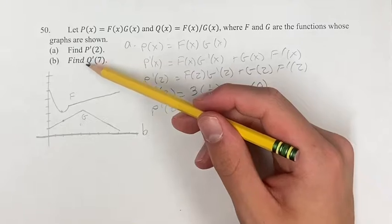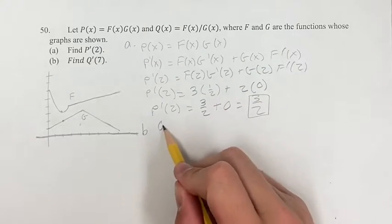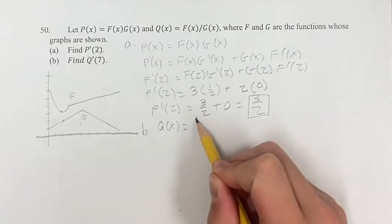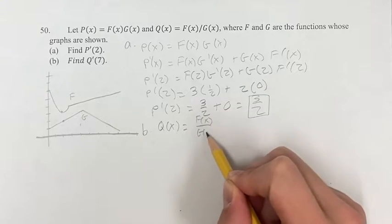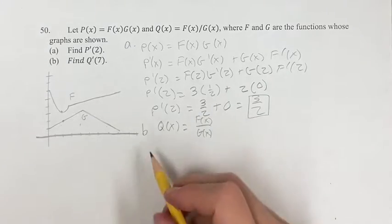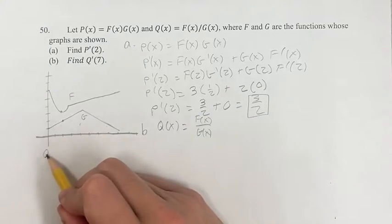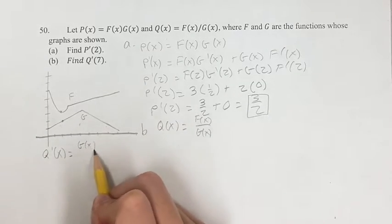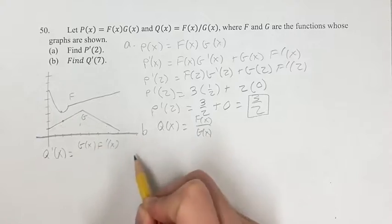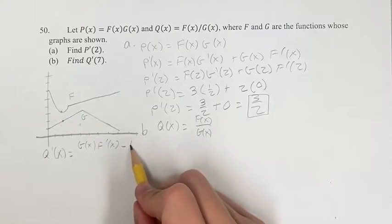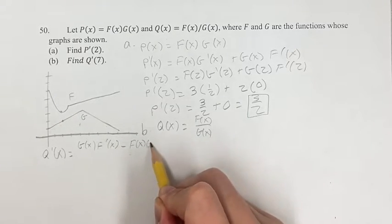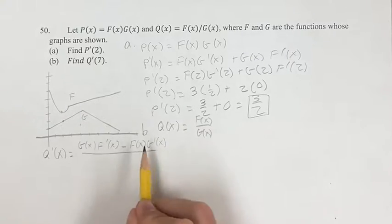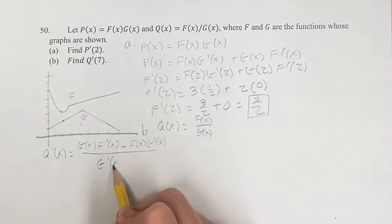Now, calculating the derivative of Q at 7, with Q(x) equal to F(x) divided by G(x). You can use the quotient rule to find the derivative of Q. So we're going to have the denominator times the derivative of the numerator minus the numerator times the derivative of the denominator over the denominator squared.